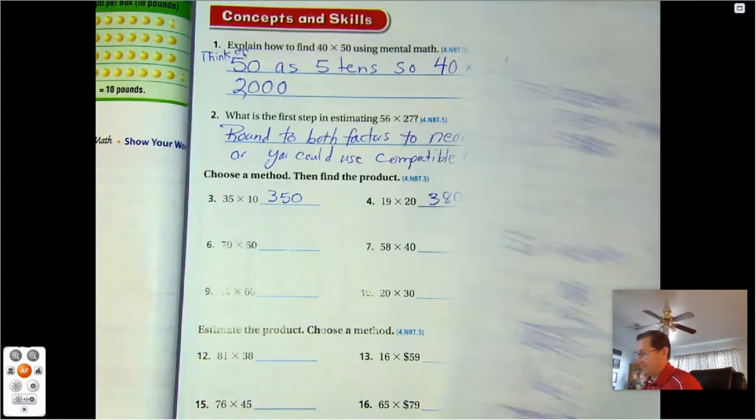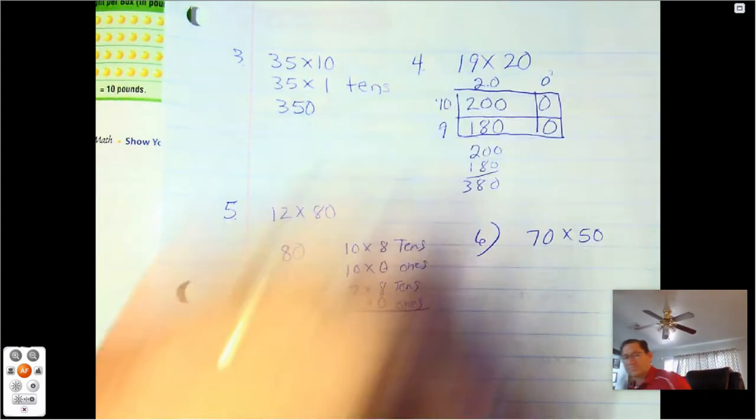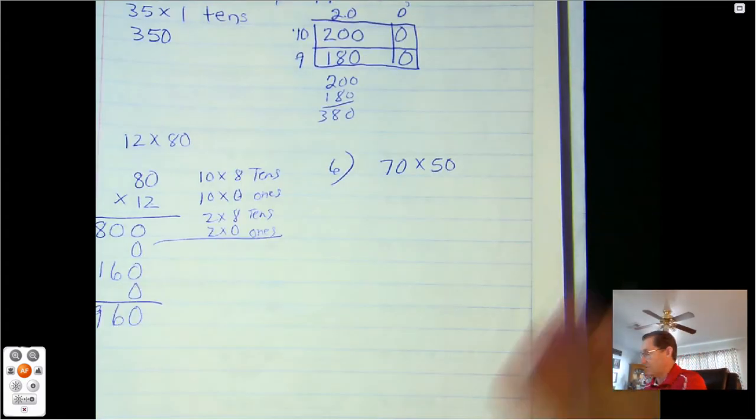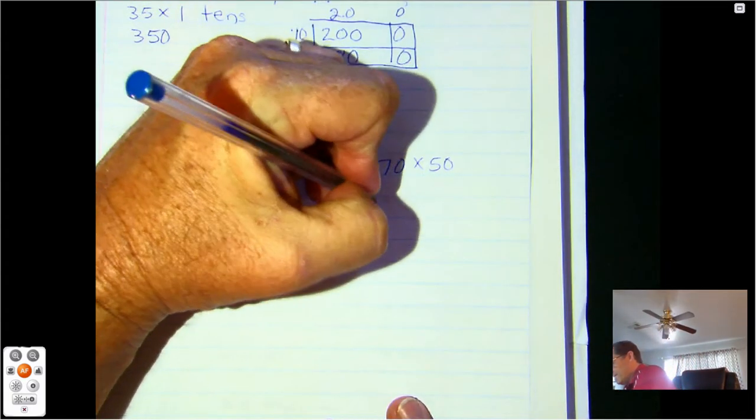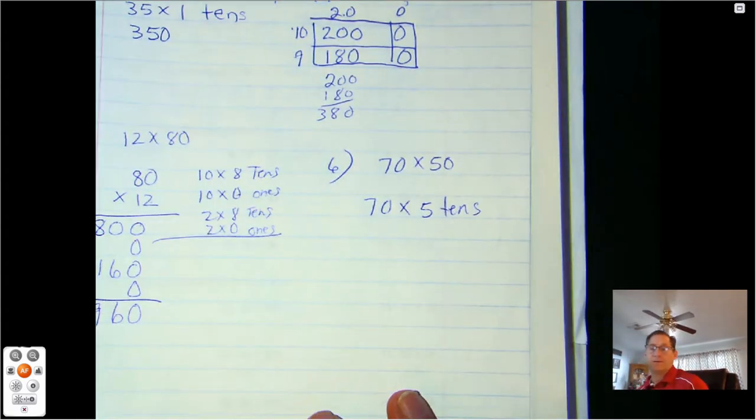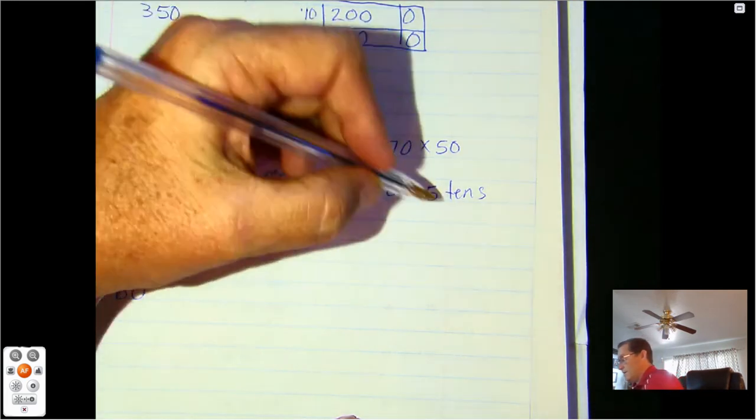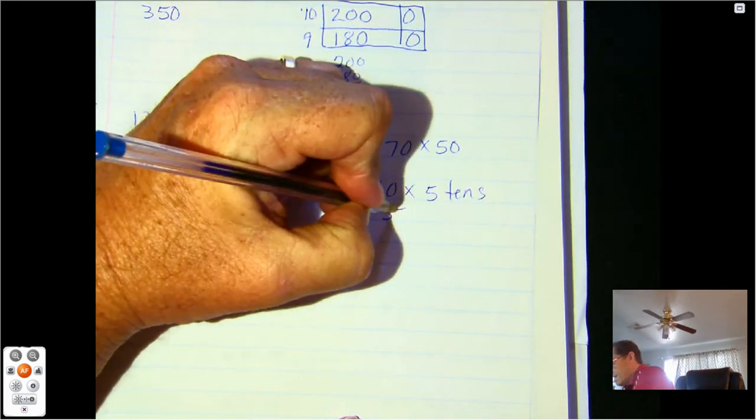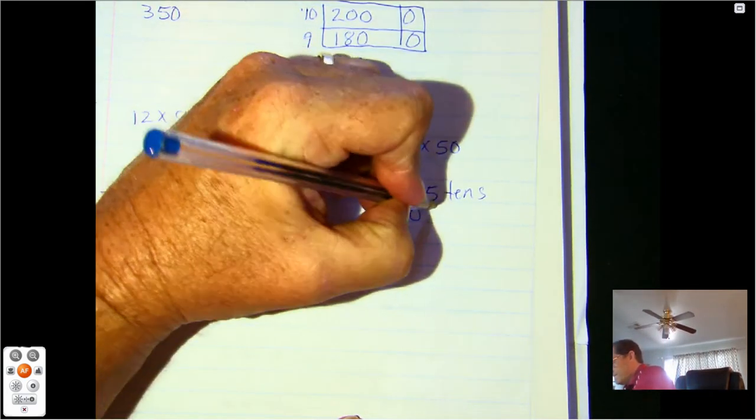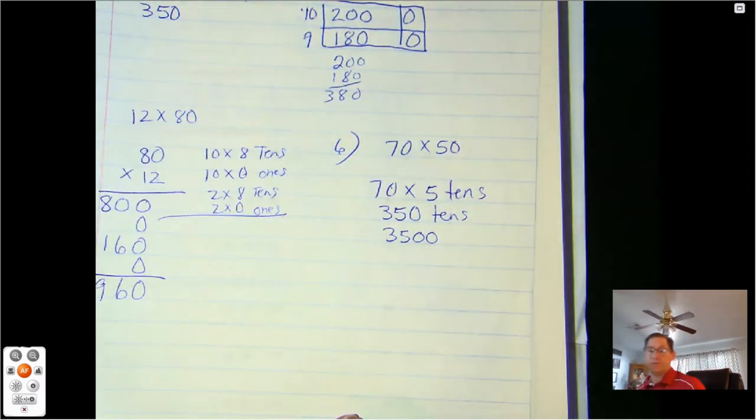Number six. 70 times 50. Since they both end in zeros, I'm going to think of the 50 as 5 tens. So 5 times 7 is 35. So 350 tens, which is equal to 3,500.